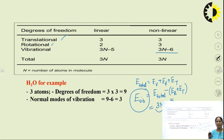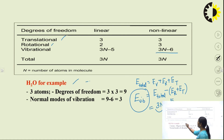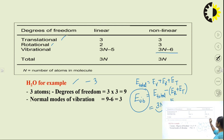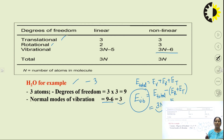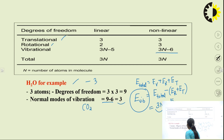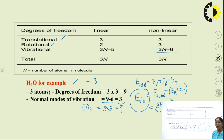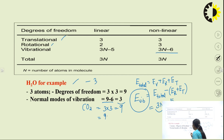For example, H₂O is a bent (non-linear) molecule with 3 atoms. Using 3N − 6: 3×3 − 6 = 9 − 6 = 3. So H₂O has 3 total vibrational changes. For CO₂, which also has 3 atoms but is a linear molecule, using 3N − 5: 3×3 − 5 = 9 − 5 = 4. So CO₂ has 4 total fundamental vibrations.